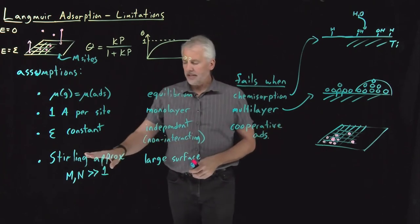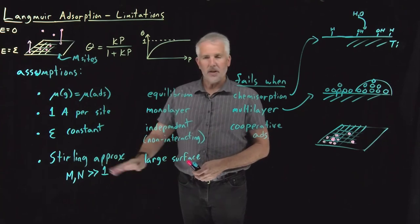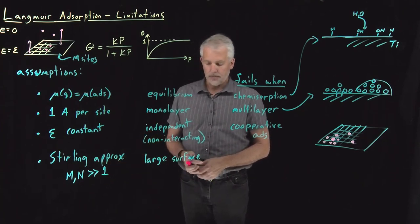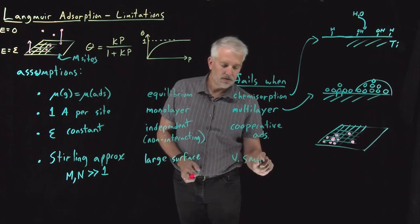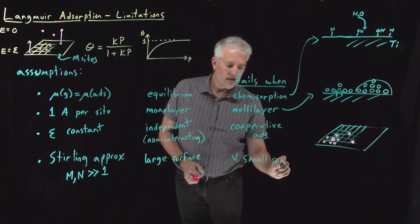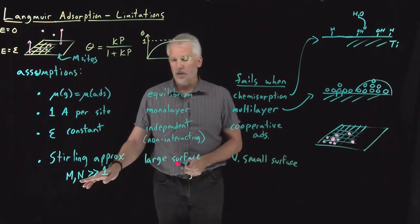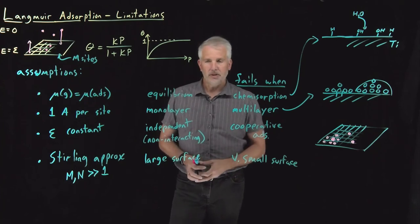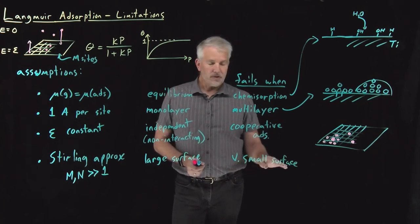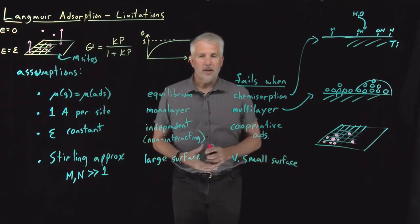The last case is less common. It's not that common that your surface is not large enough to hold at least 100 molecules, for example. But if you have extremely small surfaces, then the approximations we made by assuming we had a large number of molecules using Sterling's approximation, those approximations can break down. So if your surface is incredibly small, then you won't obey the Langmuir isotherm model as well.